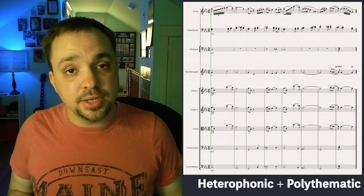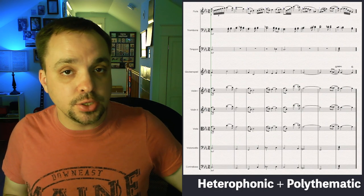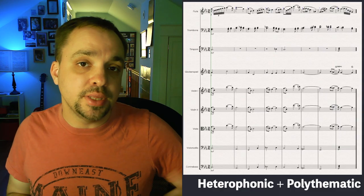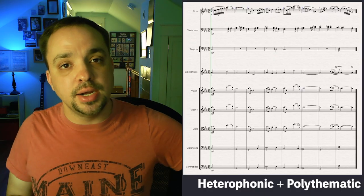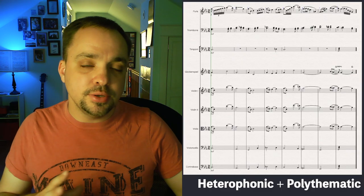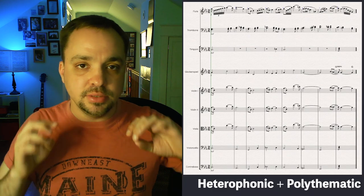For the second example I've taken the heterophonic texture — which was the simultaneous variations of the melody — and matched that up with our polythematic orchestration, where we had the main melody in the strings and then this other theme accompanying it in the trombones. I think this works pretty well because the heterophonic texture lets you dress up and re-costume your main melody without adding a lot of busyness in other registers, so there's still room for the elements of the polythematic texture to cut through and be pretty well heard.